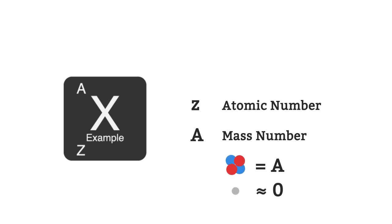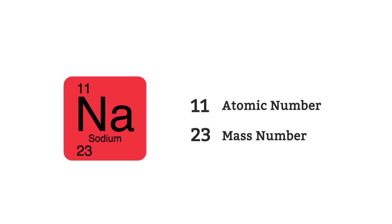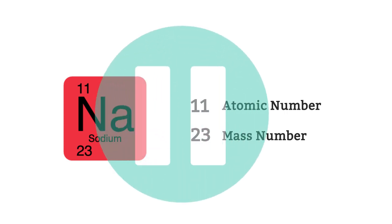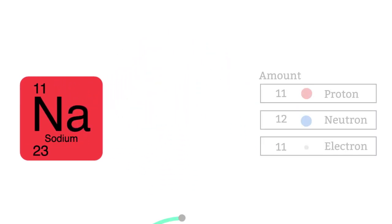The atomic number of sodium is 11 and mass number 23. How many protons, electrons, and neutrons does it have? Pause the video whilst you count them.